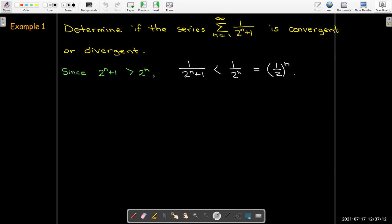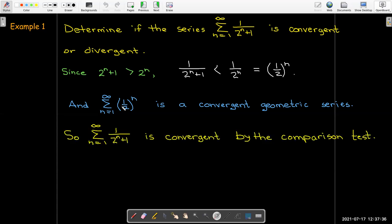These terms are smaller than 1 over 2 to the n, which I could think of as being 1 half to the power of n. And so that would mean that I have a convergent geometric series. Its terms are larger than the given series.